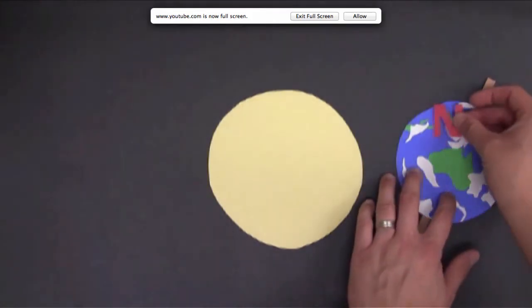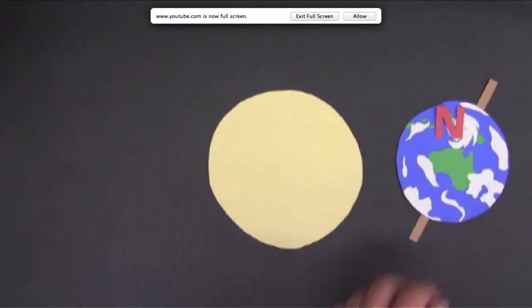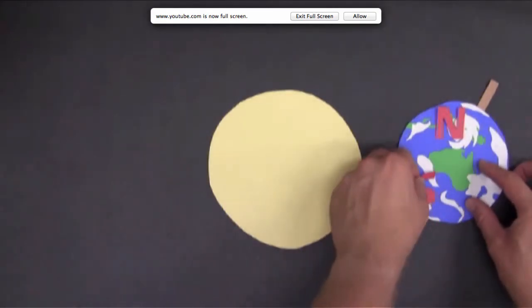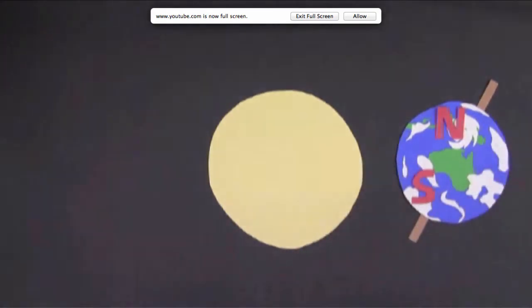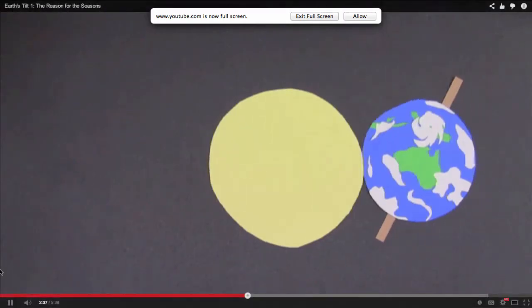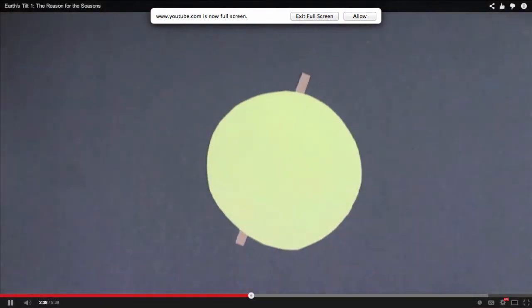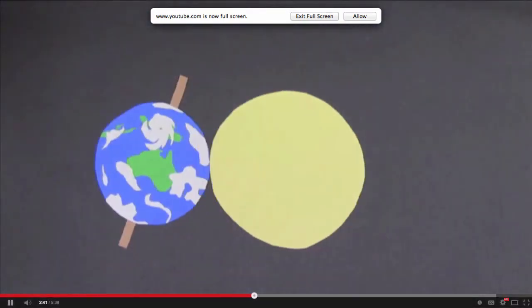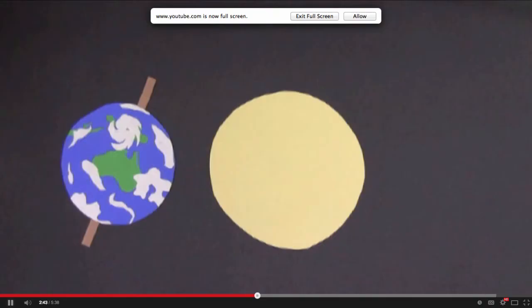So when the earth is on this side of the sun, the northern hemisphere is angled away from the sun. The southern hemisphere is angled toward the sun. When the earth is revolving around the sun, it stays tilted in the same position. The axis doesn't wiggle around or anything. It just stays fixed in a certain direction.